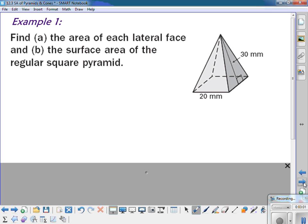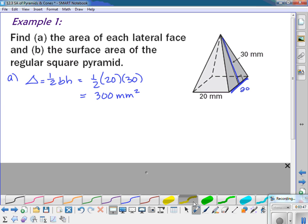So in example one, we're going to first find the area of each lateral face, and then we're going to find the surface area of the entire pyramid. So for A, I'm going to find the area of a triangle, which is one-half base times height. And so in my figure here, the base of my triangle is 20, because it's a square. It's regular. And the height, it gave me the slant height right here, is 30. And so half of 20 times 30 comes out to 300 millimeters squared. So that's the area of just one of the triangles.